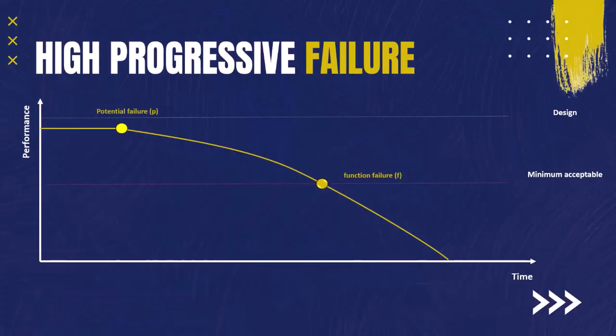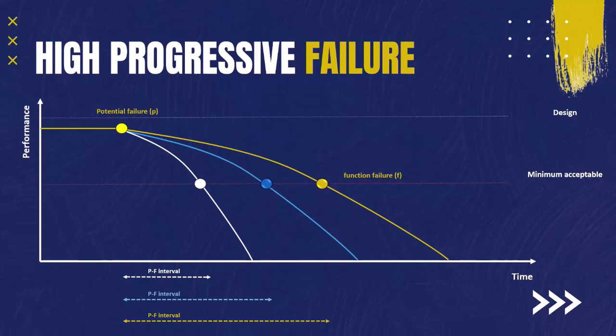Fourth and finally is the case of high progressive failure. We understand that failure is not an instantaneous event — there are warning signs that, if detected early, can prevent failure. Most assets follow a curve from good condition to progressively worse until they finally fail. The duration between potential failure (P) and function failure (F) is called the PF interval. The PF interval differs from one asset to another; some assets can have a shorter PF interval. In cases where an asset is expected to have a high progressive failure — meaning a shorter PF interval — it makes sense to closely monitor the asset condition and rely on predictive, condition-based maintenance.